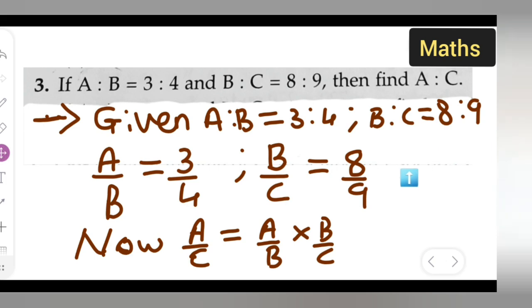So see how I've done it. A upon C is equal to A upon B multiplied by B upon C. So here B, B will get cancelled, and you will get back A upon C.